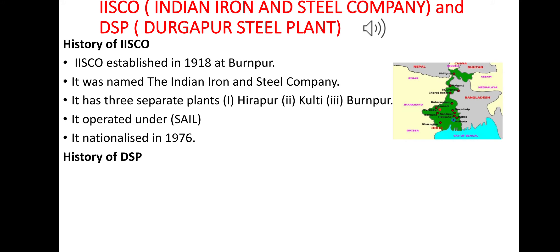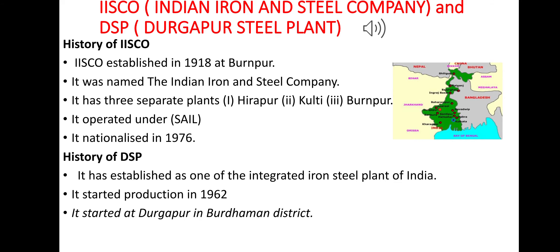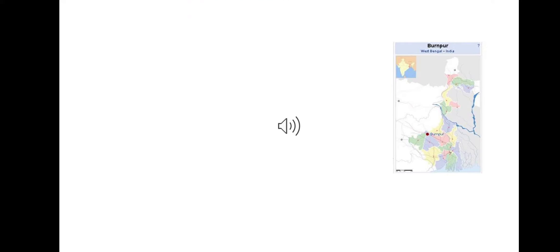The history of DSP — Durgapur Steel Plant: it is one of the integrated iron and steel plants of India. It started production in 1962 at Durgapur in Bardhaman district, and also operates under SAIL.